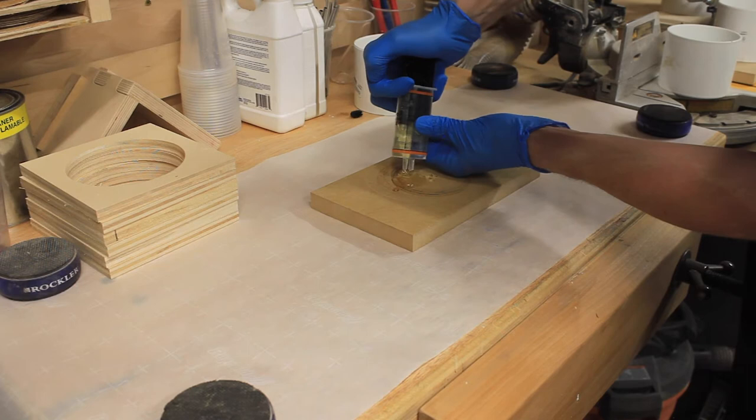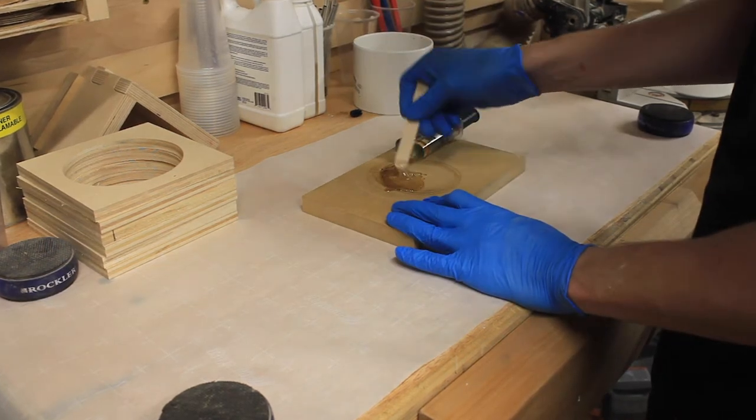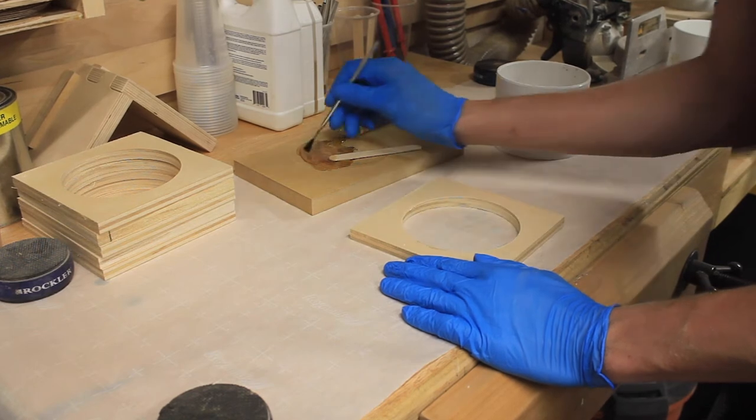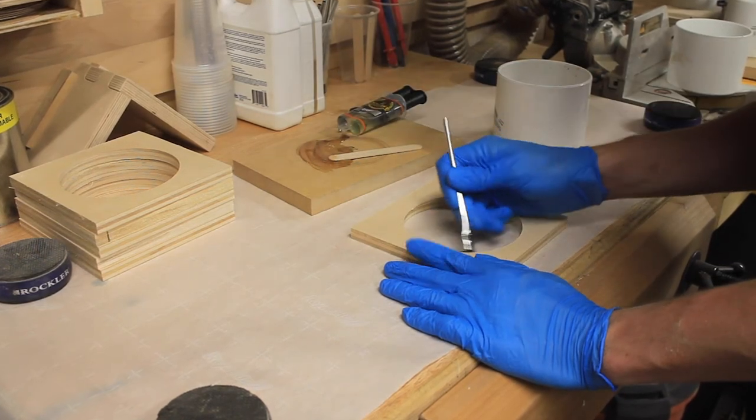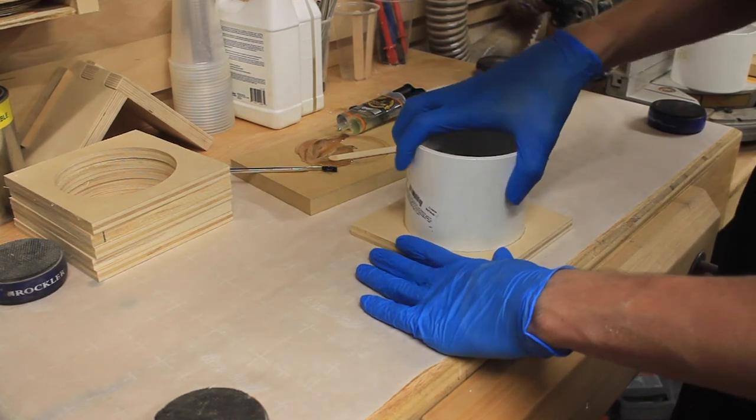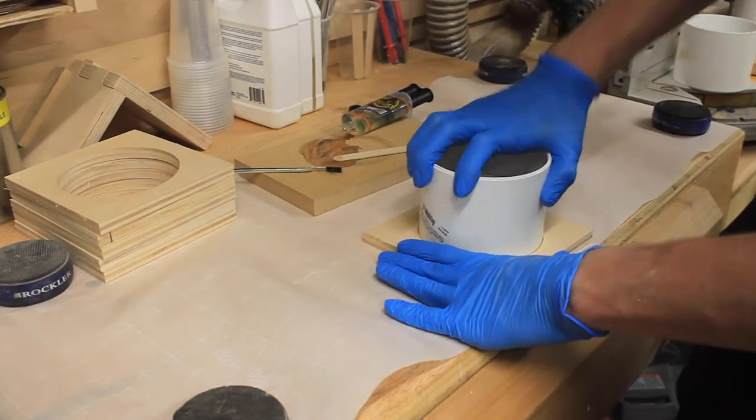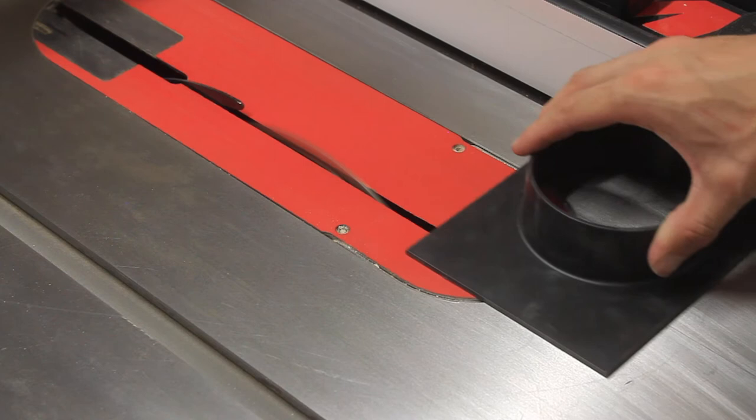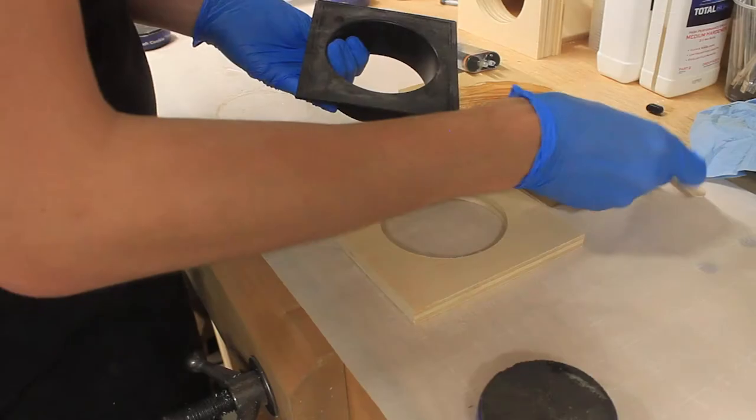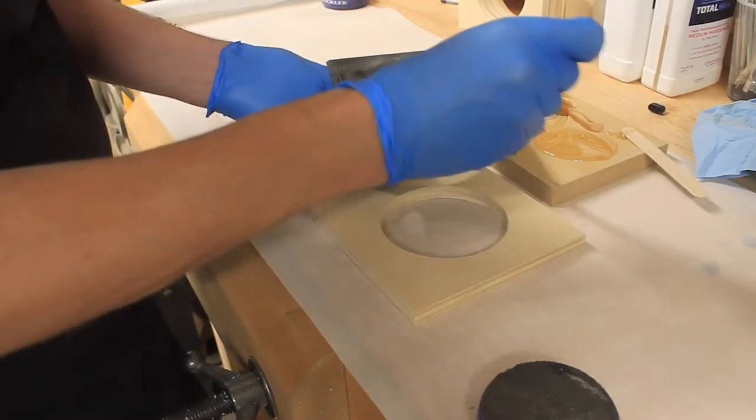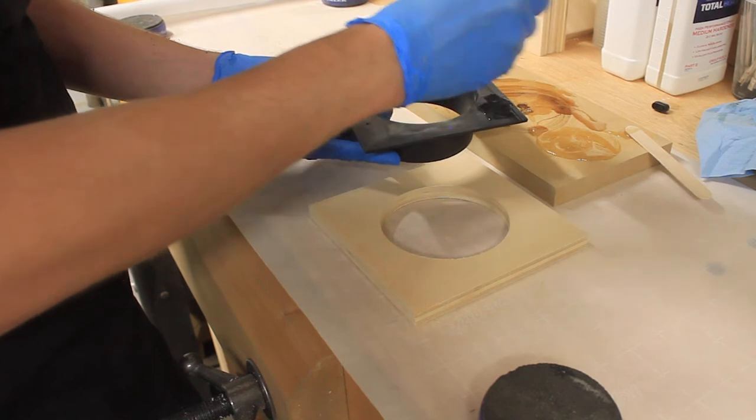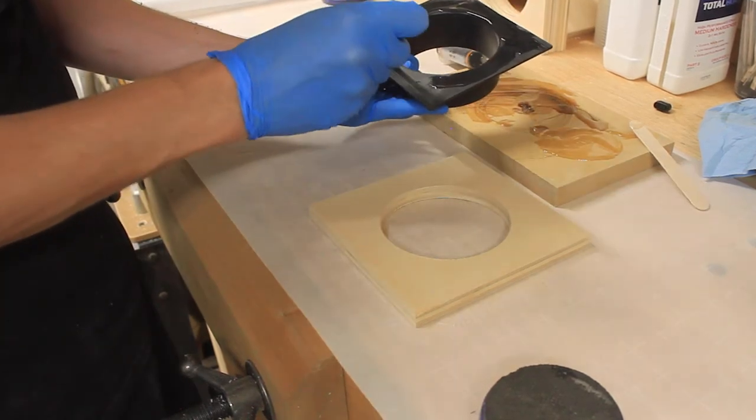Next, I mixed up some 5-minute epoxy and set my sewer and drain coupler in the top circle. For the bottom half, I needed to first square up the salvaged connector from the Rockler blast gate. Once square, I roughed up the glue side with some sandpaper for better adhesion and epoxied it to the corresponding assembly.